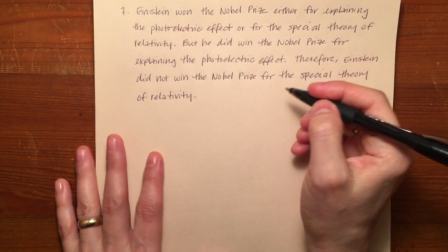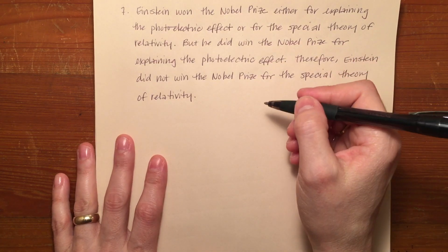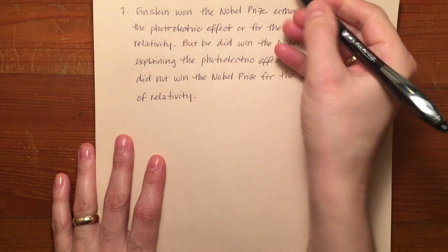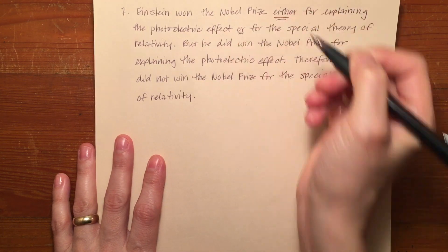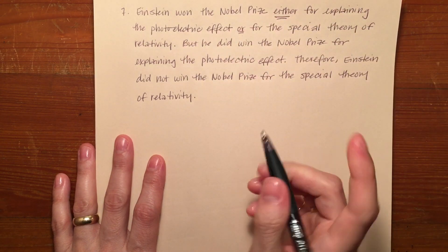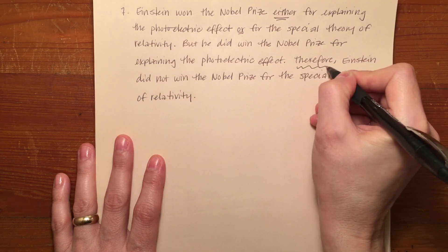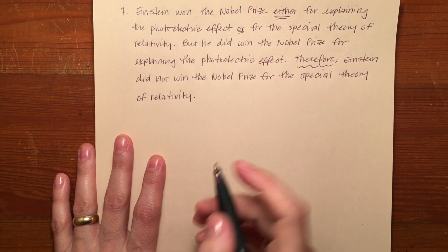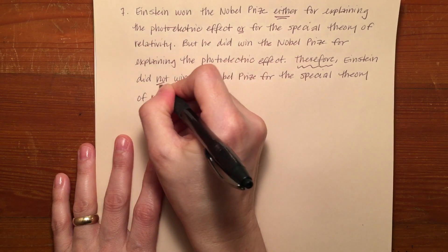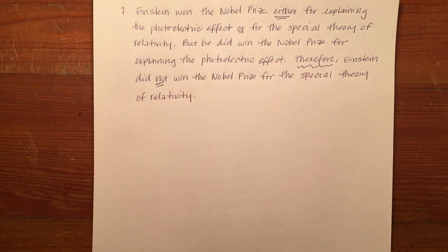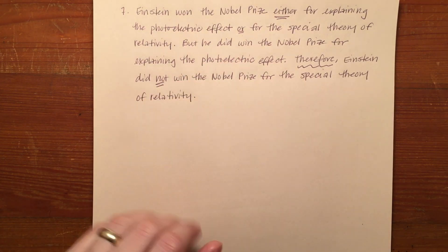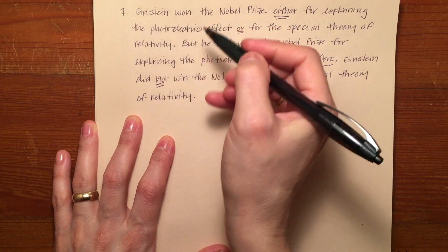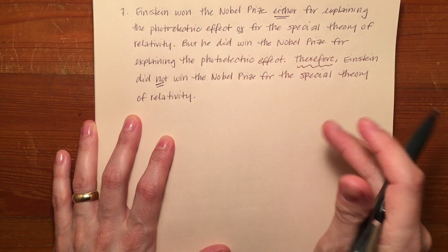The thing we must immediately recognize is that this either-or is there. We also notice that there's a 'therefore' showing where the conclusion is, and we also see a 'not'.